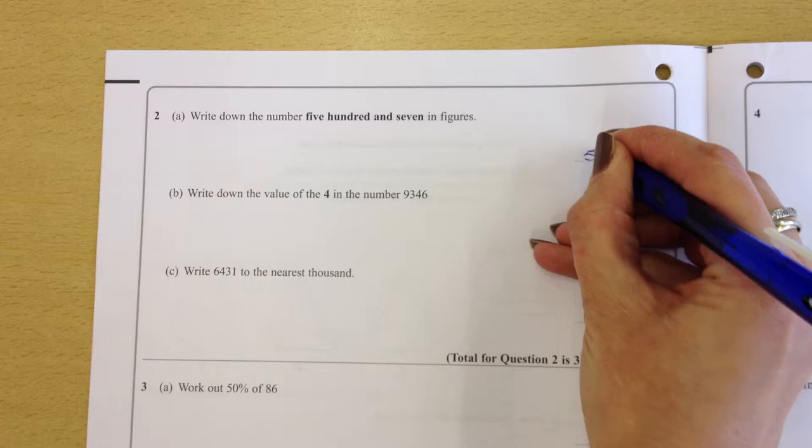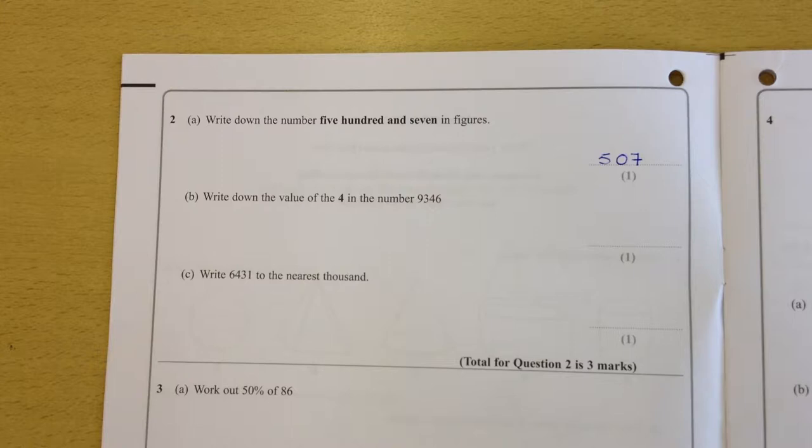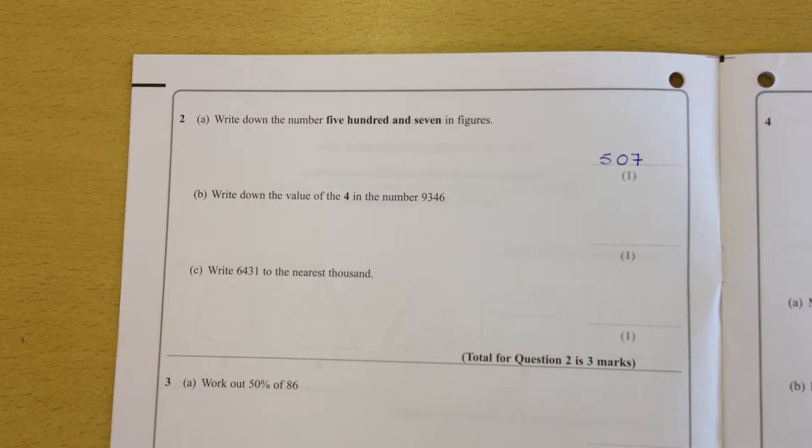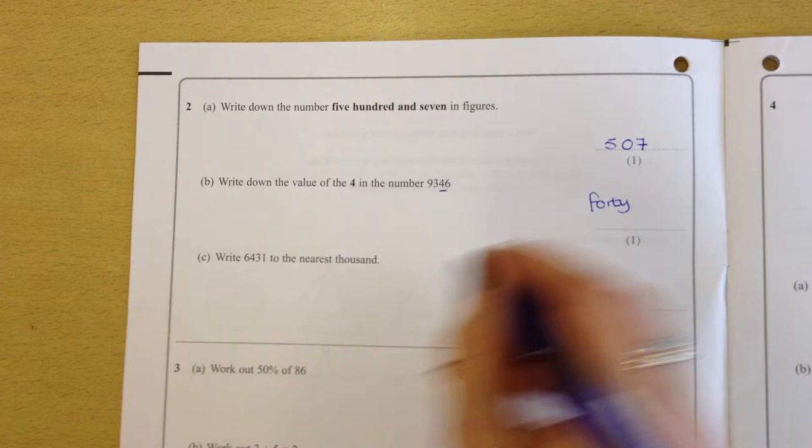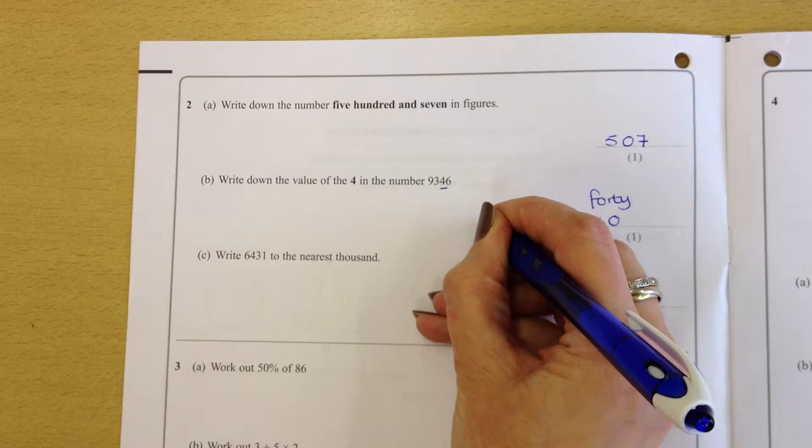OK, B. Write down the value of 4 in the number 9,346. It's obviously going to be that 4 we're looking at. So you'd get it right if you wrote 40 or 4, 0 or 4, 10s. Any of those will be fine.